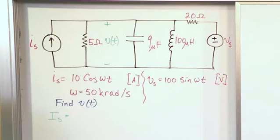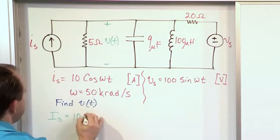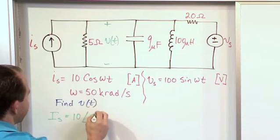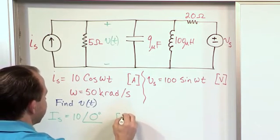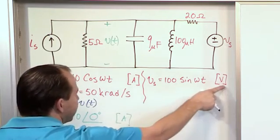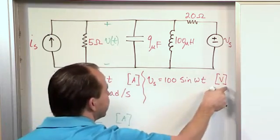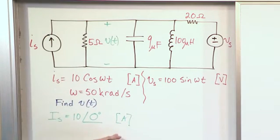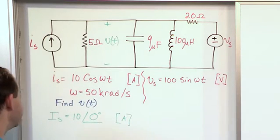What is the phasor representation of this going to be? Well, it's magnitude, which is 10, at an angle of, and there's nothing there, so you know it's zero degrees. And I put a little bracket A here. The A means amps, the V means volts. I put my units in brackets like this so that I don't get confused. Start putting A's and V's everywhere and you start maybe getting a little confused. So the units are in brackets. That's kind of up to you if you want to do that or not.